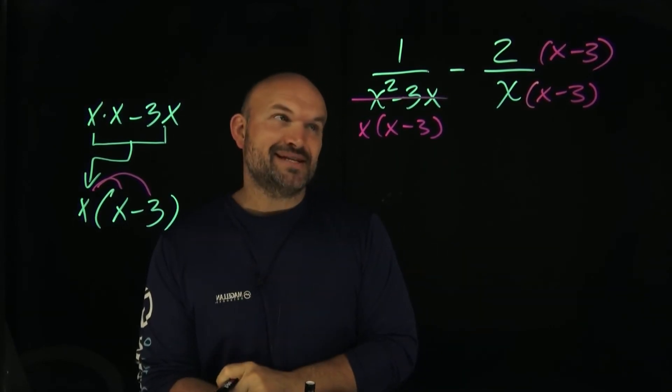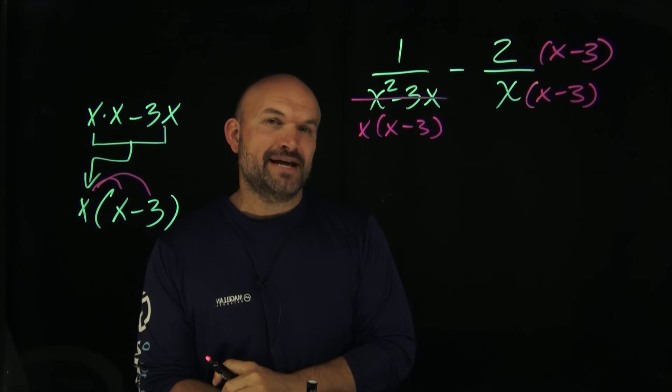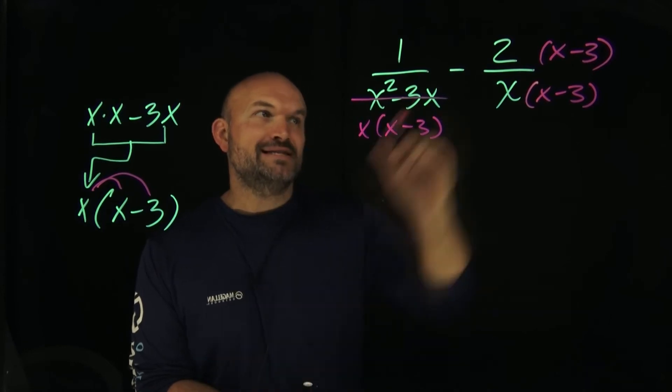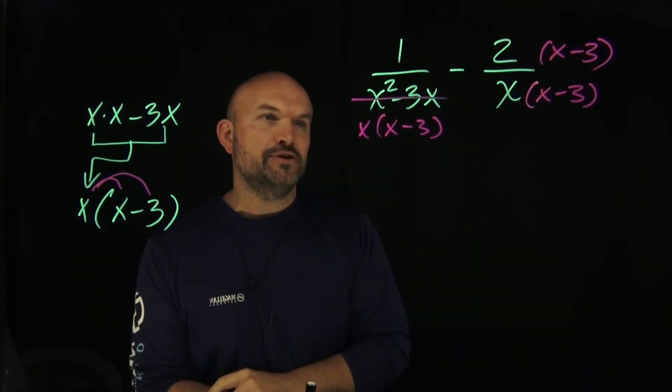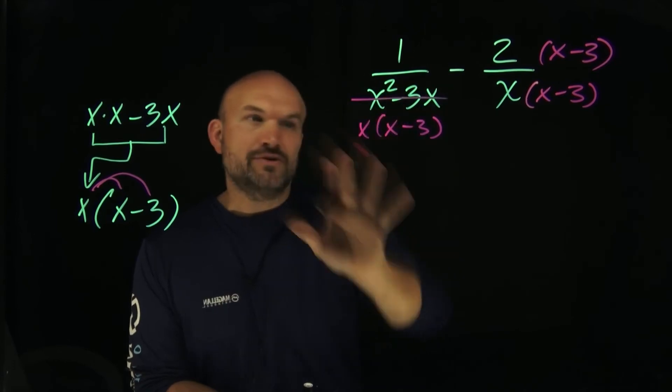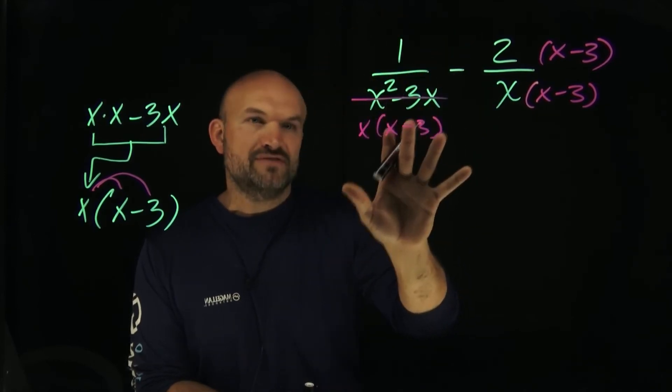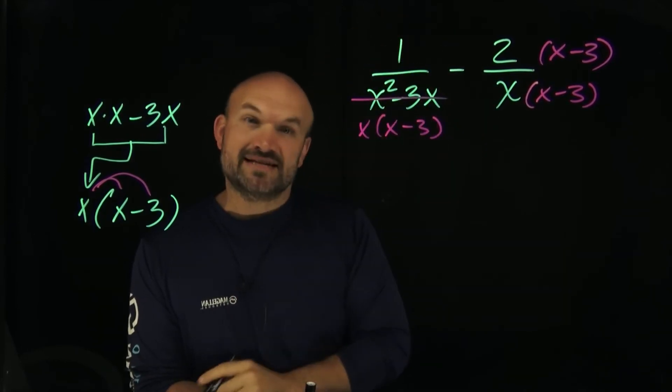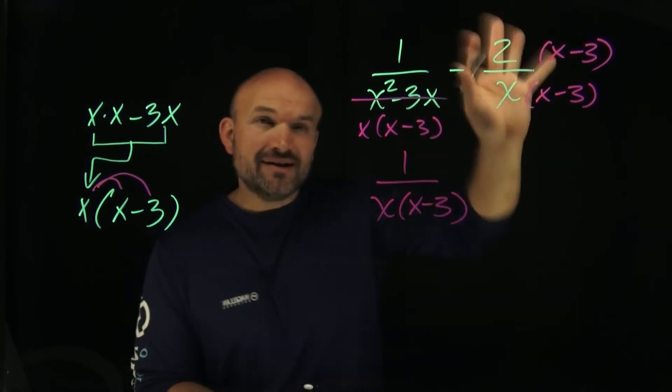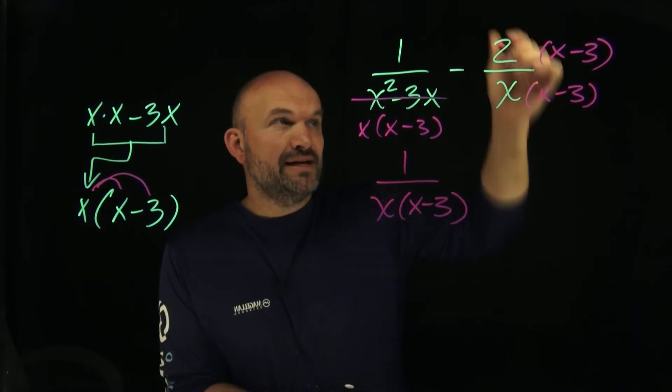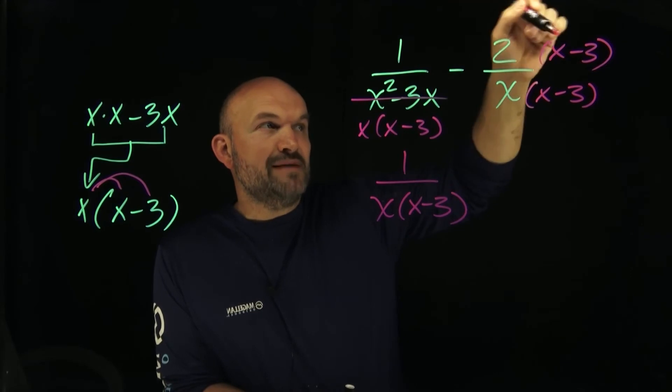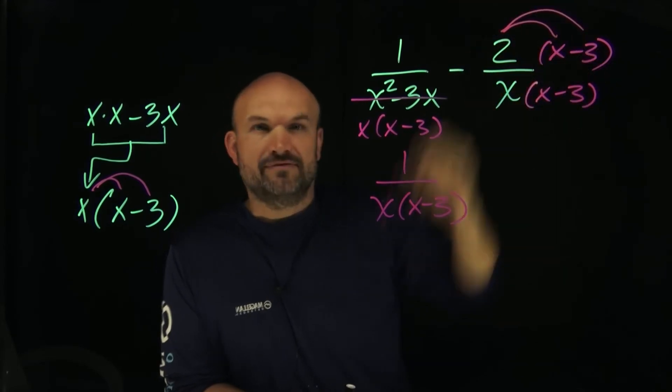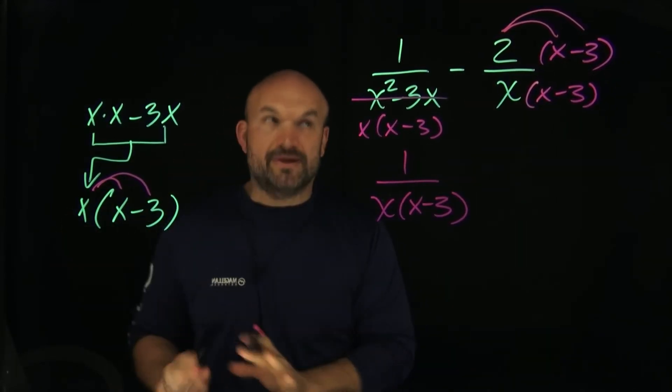Now we're going to get into the mistake. This is where students make the mistake. It comes through when they just go ahead and apply their operation in the numerator. Over here I didn't have to do anything—this is preserved as 1 over x times (x minus 3). But over here I need to simplify, and what I'm doing is multiplying the 2 times x and then 2 times negative 3, following the distributive property.